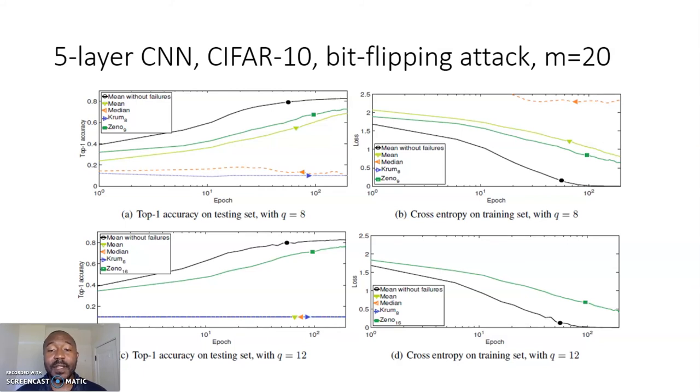These results show that Zeno outperforms both median and crumb, particularly when there are more attacked workers than benign workers, which is a known failure case of median and crumb, but also still outperforms in cases where there are fewer attackers than benign workers. The mean without filters is also shown on the plot as an empirical upper bound.